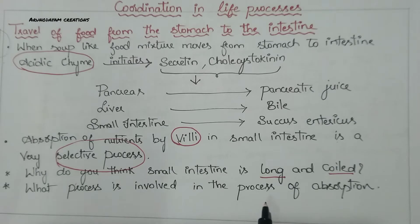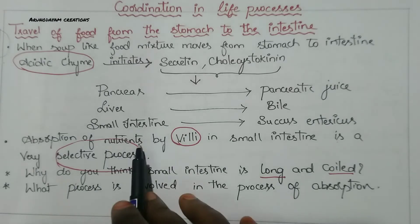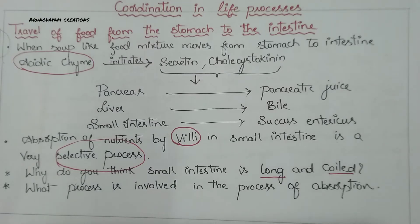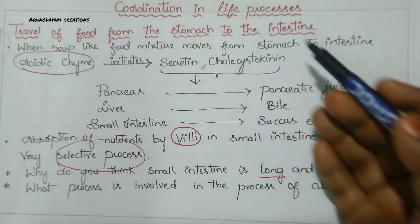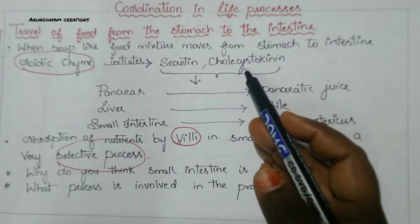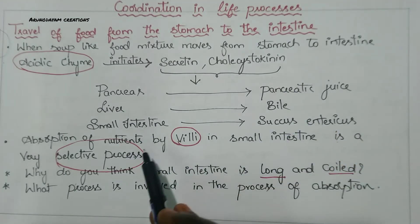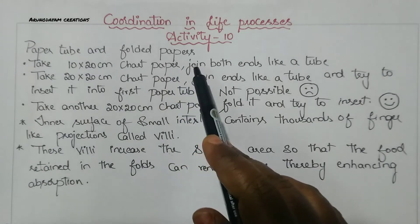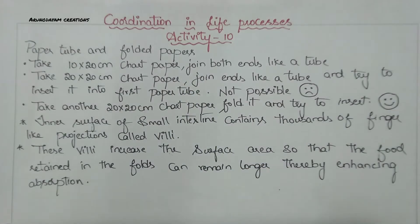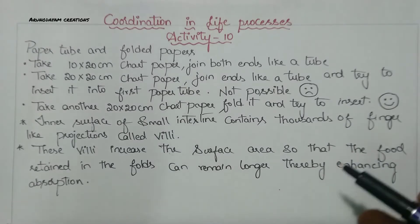What process is involved in the absorption of nutrients? It is a selective process - only essential nutrients are absorbed. Next is activity 10. In this topic related to stomach and intestine, we will do a paper tube and folded papers activity to demonstrate the importance of the small intestine. The small intestine has finger-like structures called villi. This is a practical activity.